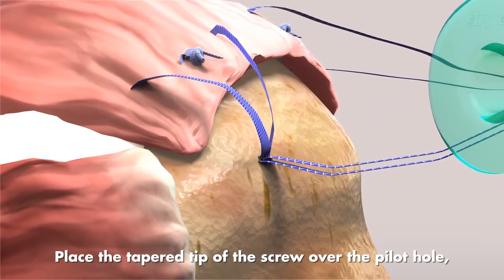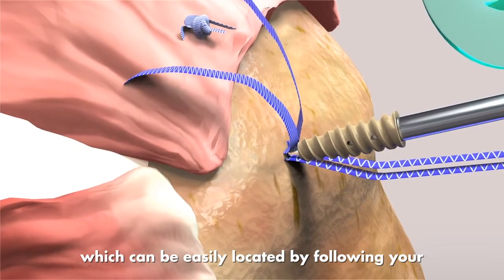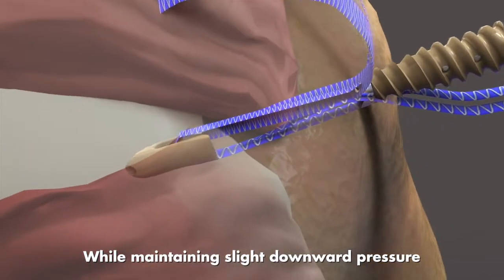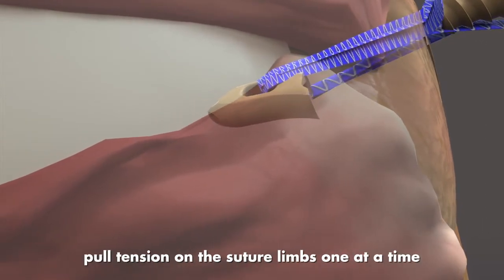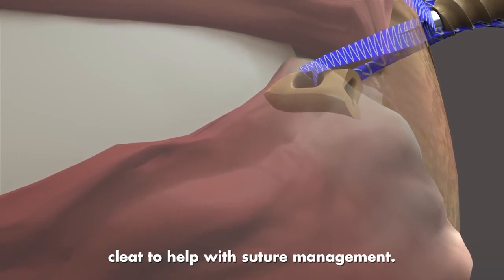Place the tapered tip of the screw over the pilot hole, which can be easily located by following your suture to the aperture of the hole. While maintaining slight downward pressure on the screwdriver handle, pull tension on the suture limbs one at a time and, if desired, place them into the cleat to help with suture management.